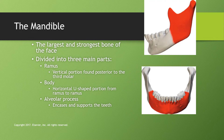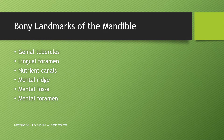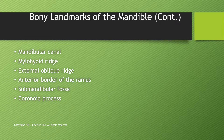Moving to the mandible: it is the largest and strongest bone of the face, and one of the few that is not a paired bone. It is the only movable bone of the face and is divided into three main parts: the ramus — the vertical portion posterior to the third molar; the body — the horizontal U-shaped portion from ramus to ramus excluding the teeth area; and the alveolar process — the part up by the teeth. The bony landmarks we'll cover are the genial tubercles, lingual foramen, nutrient canals, mental ridge, mental fossa, and mental foramen.